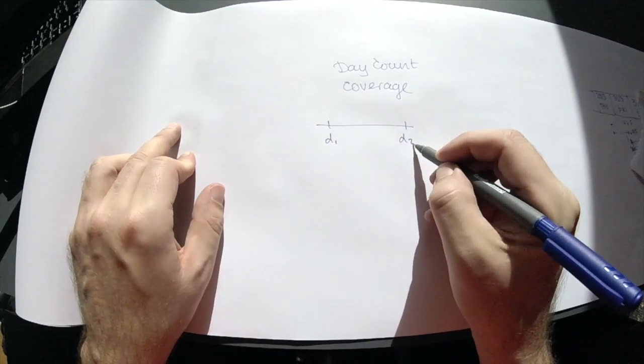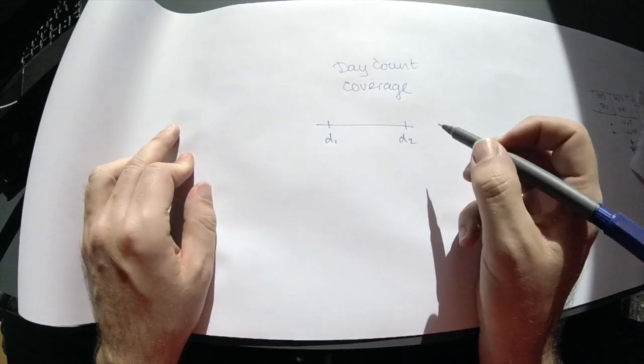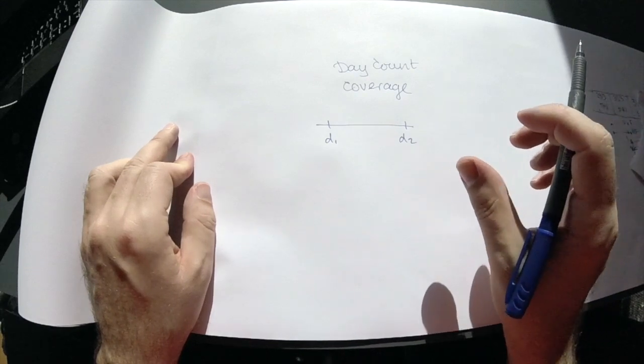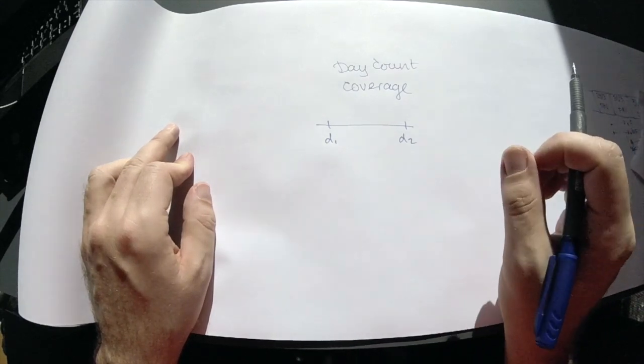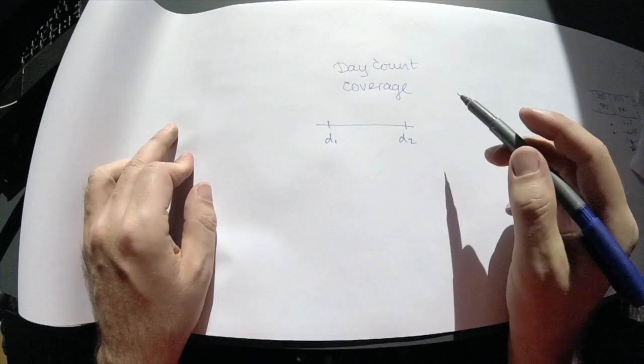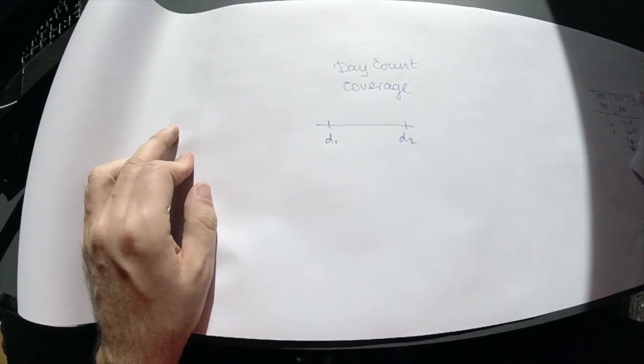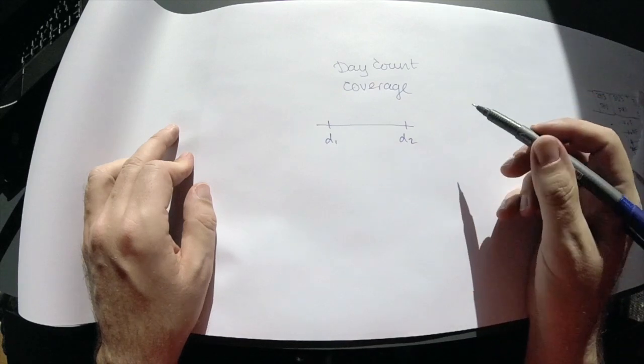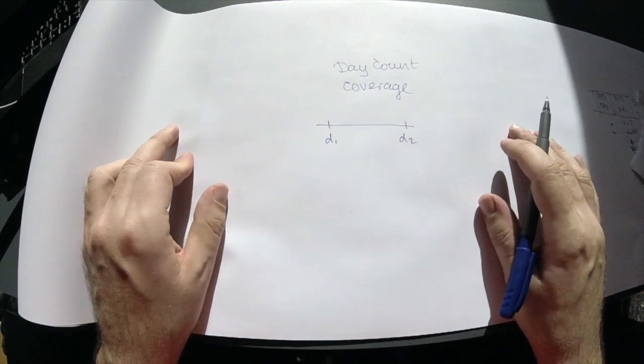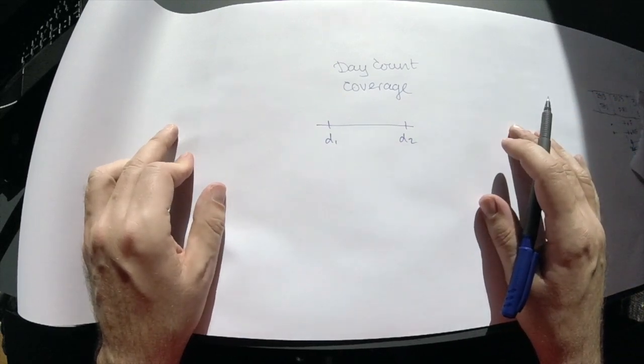So date one, date two. Generally, we try to measure the number of days as a fraction of a standardized year. You may ask what is the length of a year, and we can show a few examples of the most common day count conventions.